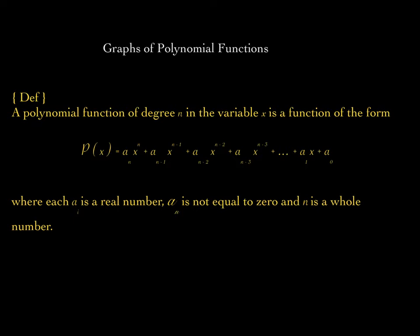What we must understand is that the behavior of the graph of a polynomial function is due largely to the value of the leading coefficient a sub n. This leading coefficient has major impacts on what the graph of the polynomial function will look like. Also important is the parity of this n value — whether it's even or odd — whether this leading term has even degree or odd degree. For that reason, we say that this is the dominating term, or leading term.